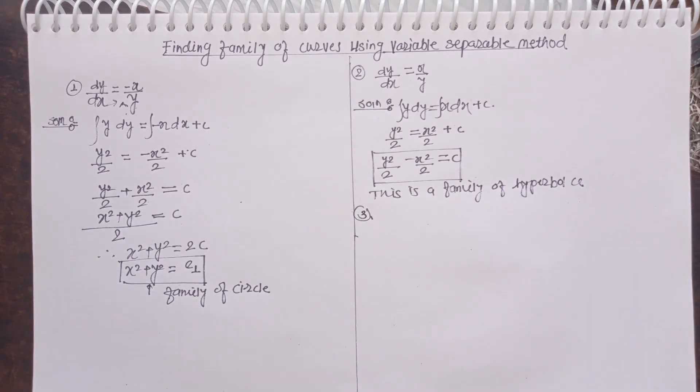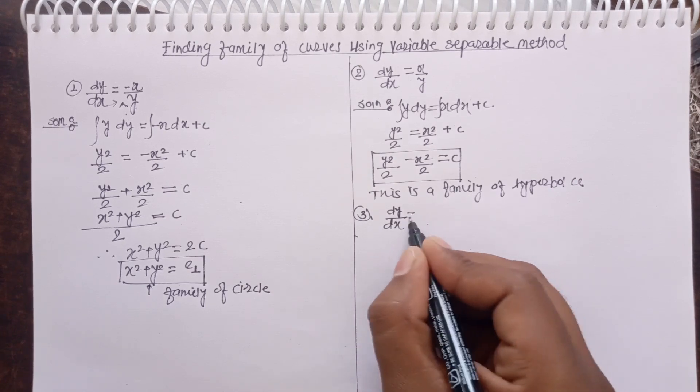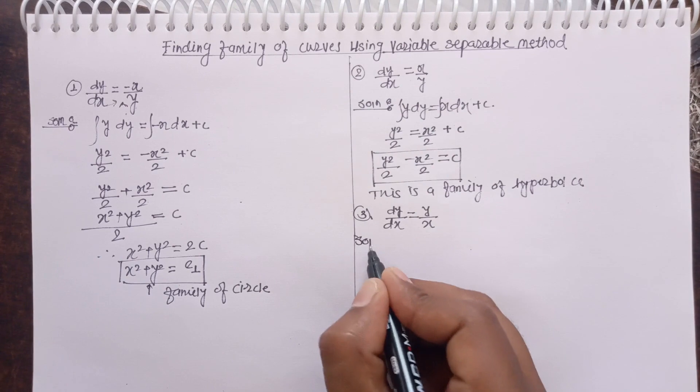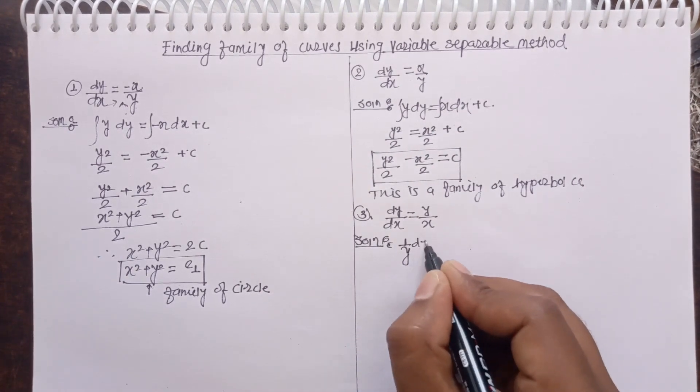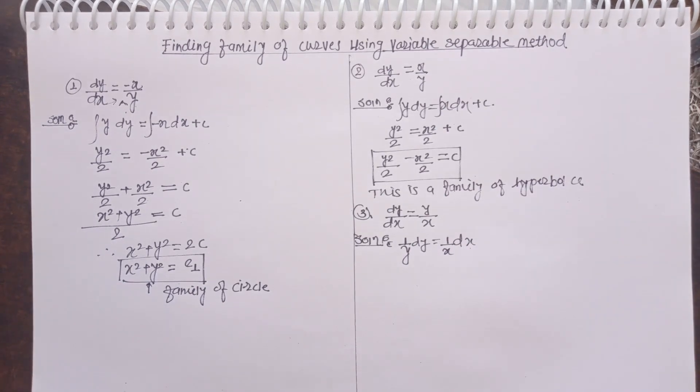Now see the last one of this video. Dy by dx equals to y by x. The solution. 1 by y into dy, 1 by x into dx. Variable gets separate.